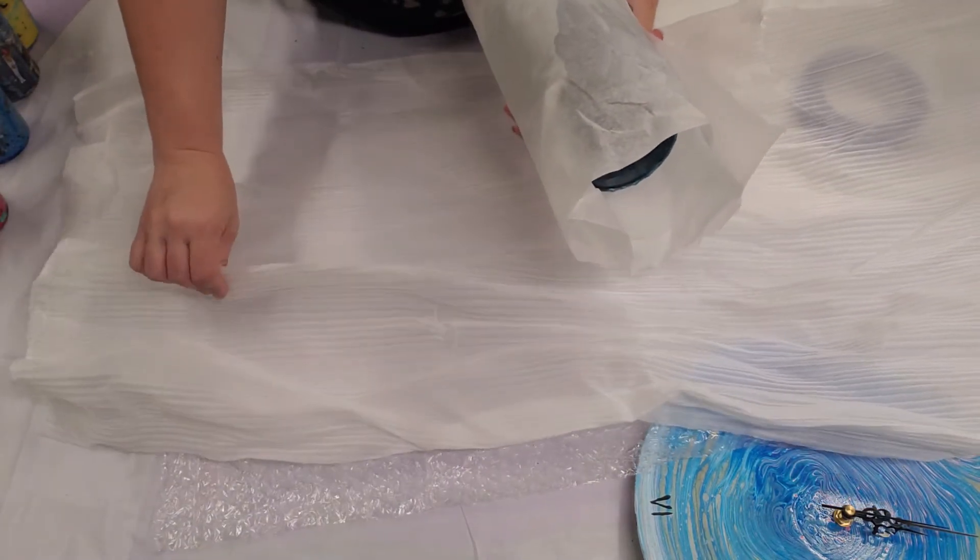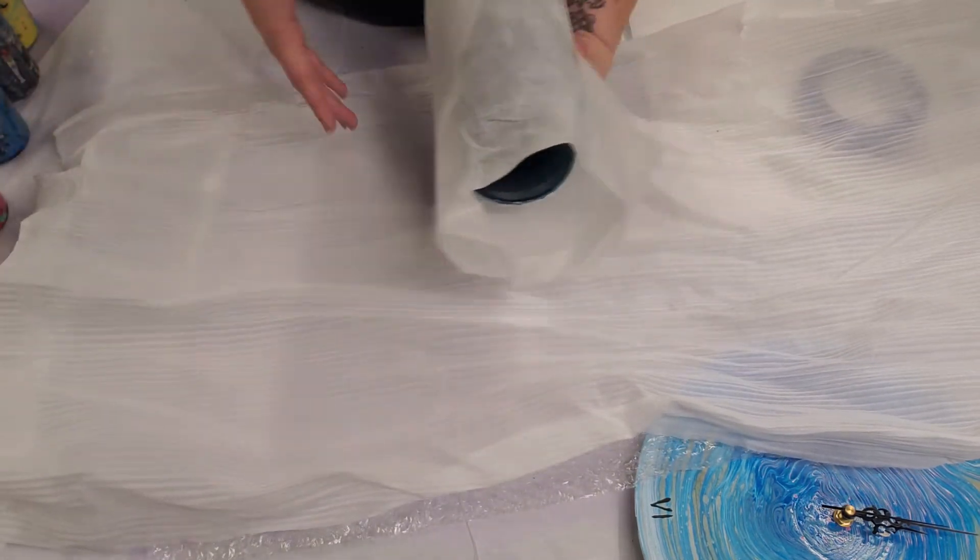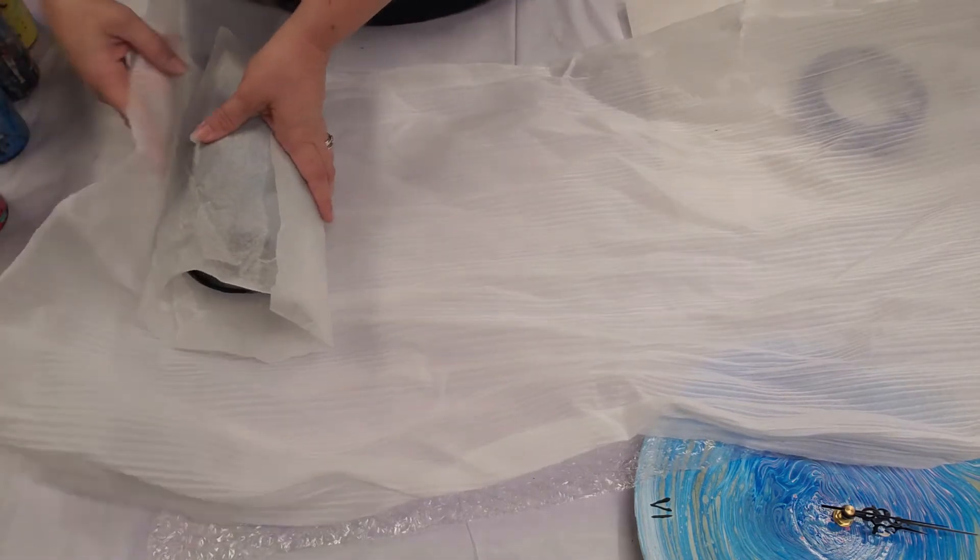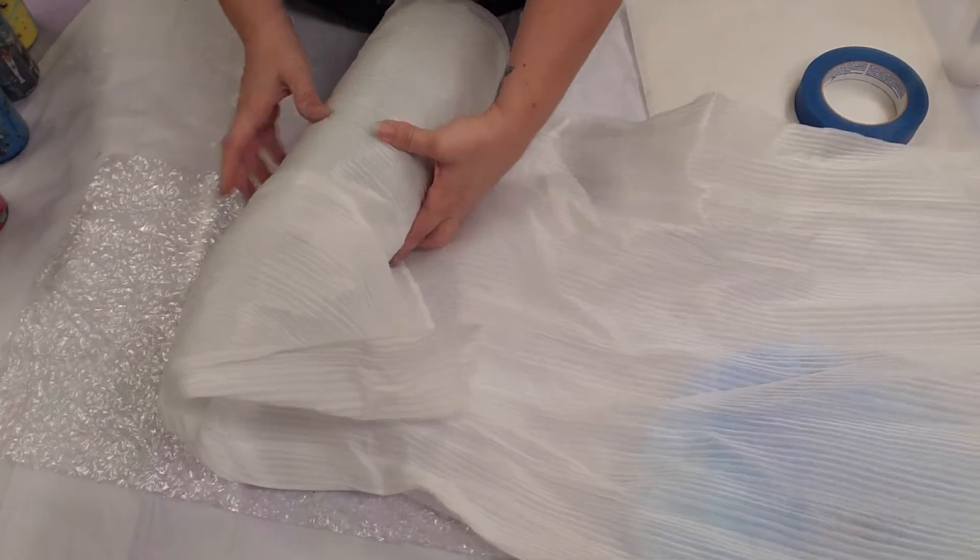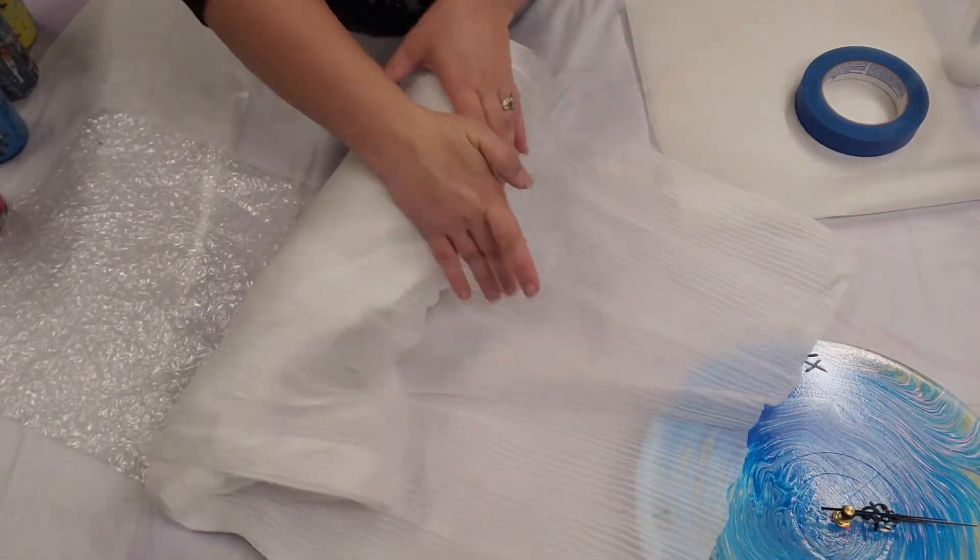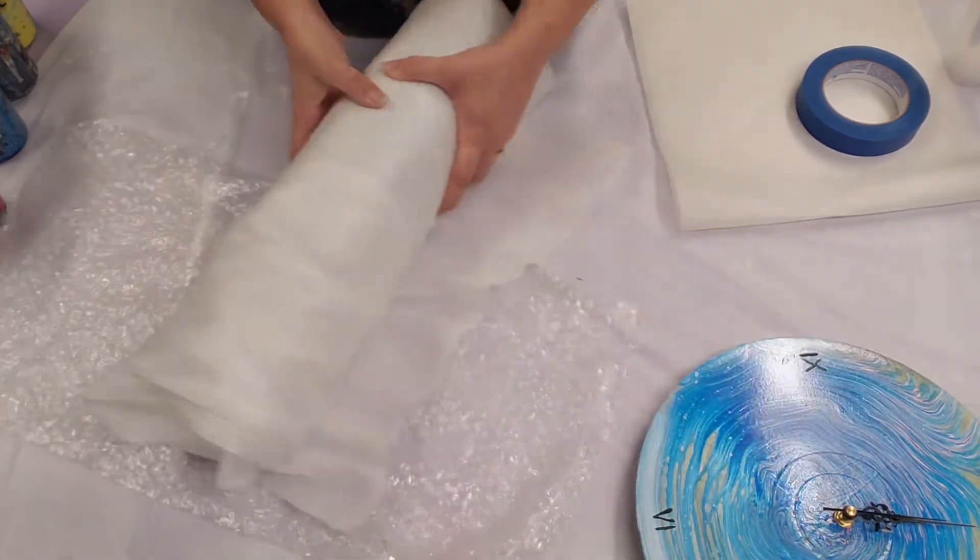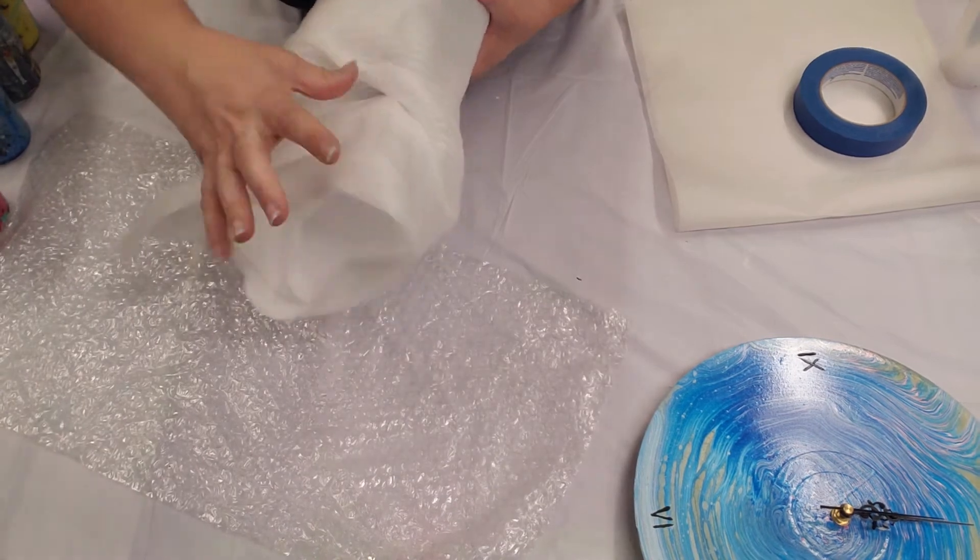Alright, now I have this foam stuff which is used for packing dishes. It's thin, it's great, so I like to use this for my glass pieces. And once again we're gonna just go ahead and I'm gonna roll it. There we go.